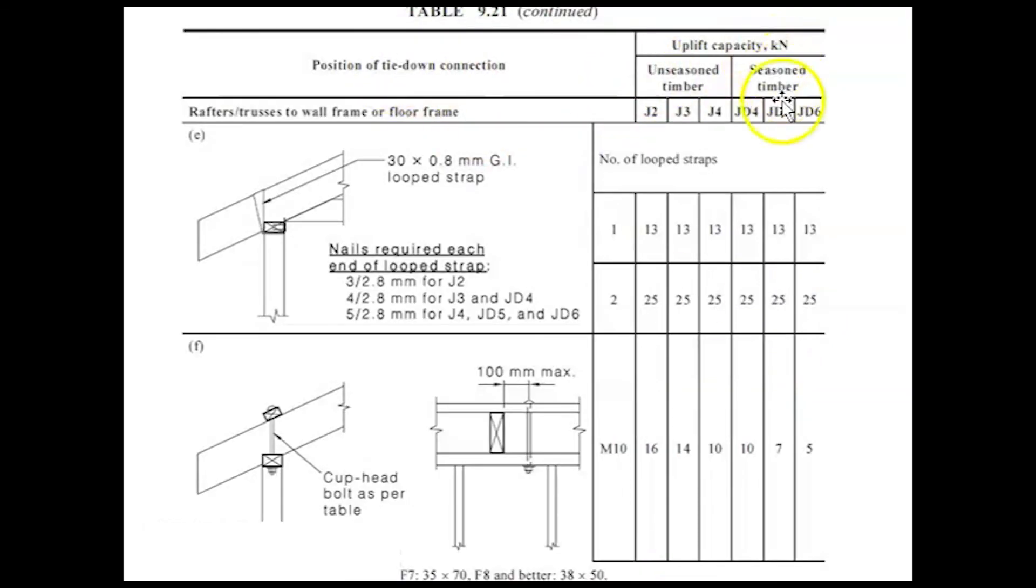Okay, the next page here, there's our column JD5. This first number is 13—that's heaps. So what does that mean? That means a galvanized iron looped strap, which basically means it goes over the truss, under the top plate and up behind the top plate. That's a looped strap. Down here, JD5 requires five nails each end. So a looped strap, five nails each end. One strap is going to give me 13 kilonewtons of force holding the end of that truss down. And that's heaps. And there we are, we have chosen what fixing is required for the end of that truss.